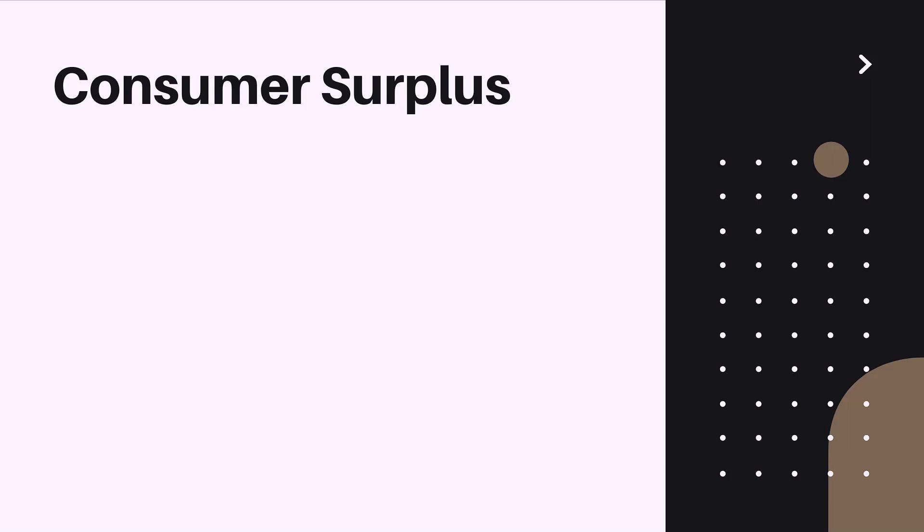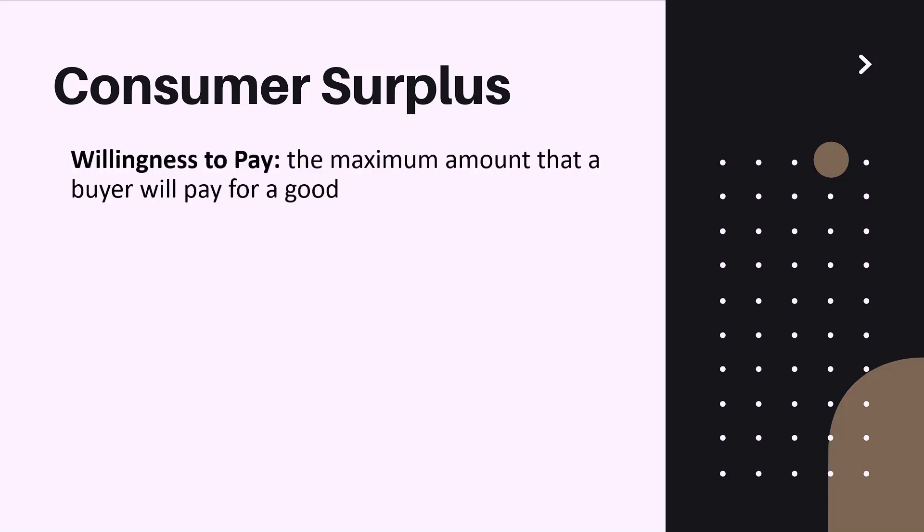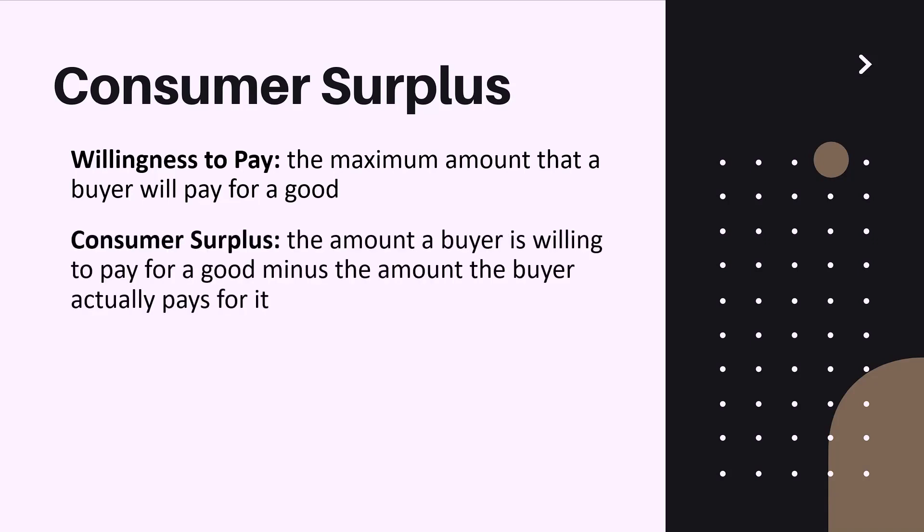Firstly, let us discuss consumer surplus. To understand this concept, we first need to understand willingness to pay — the maximum amount that a buyer will pay for a good. Consumer surplus is the amount the buyer is willing to pay for a good minus the amount the buyer actually pays for it.